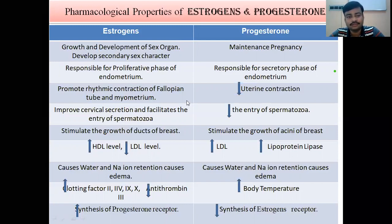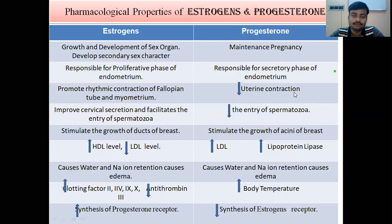Estrogen is responsible for the rhythmic contraction of the fallopian tube and myometrium, whereas progesterone reduces uterine contraction. In the pregnant condition, the level of progesterone is higher, and this reduction of uterine contractions is extremely helpful for pregnancy. Estrogen improves cervical secretion and facilitates the entry of spermatozoa, while progesterone reduces the entry of spermatozoa. After fertilization, progesterone level becomes higher, maintaining the fertilized egg.